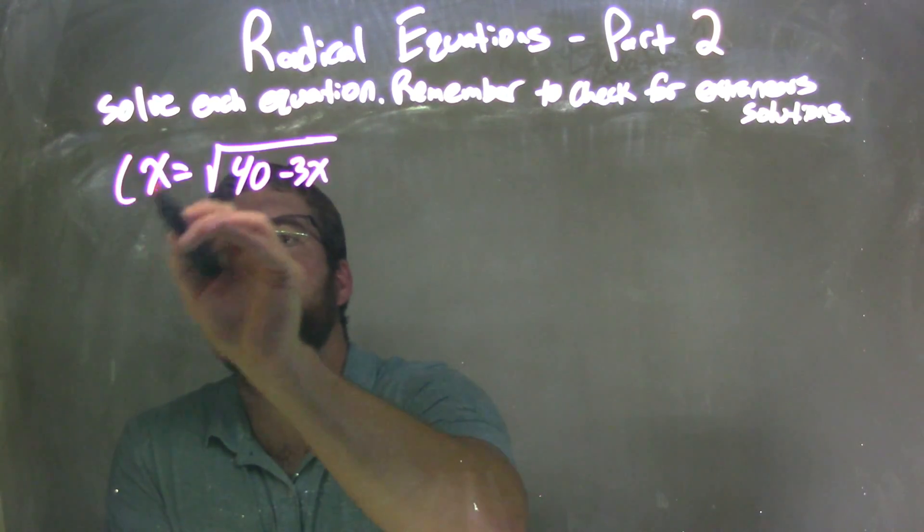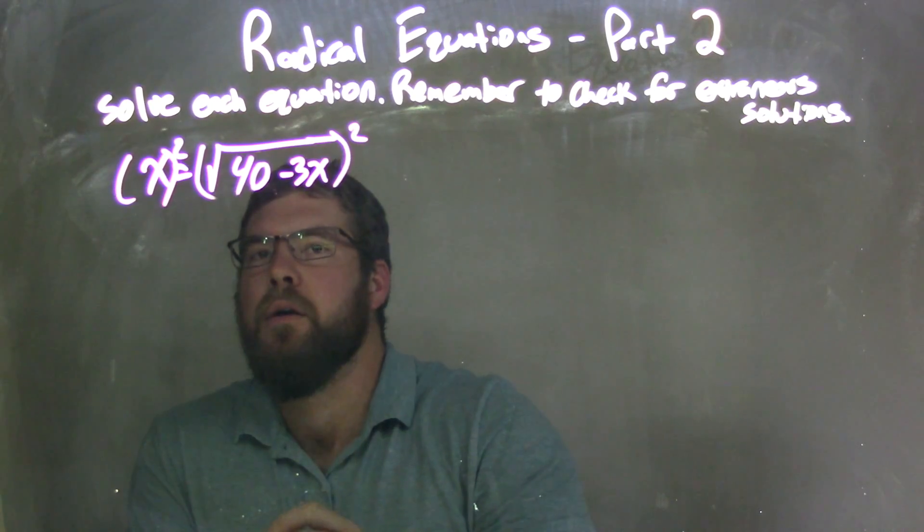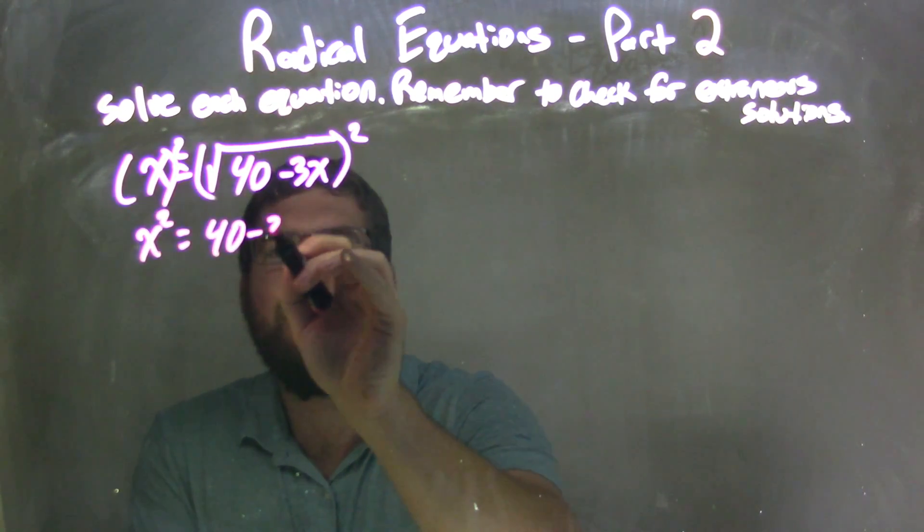I'm going to square both sides here, get rid of the radical, leaving me with x squared equals 40 minus 3x.